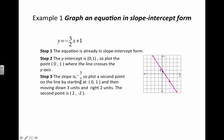The slope is negative 3 halves, so plot a second point by starting at 0, 1 and moving down 3 units and to the right 2 units, giving us the second point 2, negative 2. Alternatively, we could go up 3 and left 2 to get another point on the line. Then connect the dots by drawing a line through the two points, with arrows at each end to indicate the line continues forever.